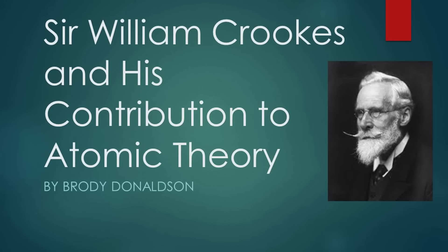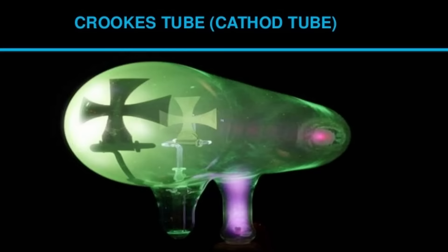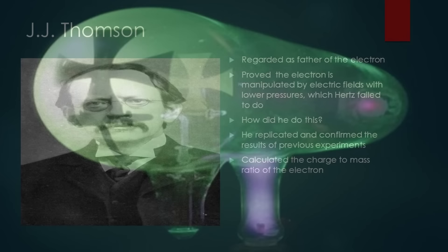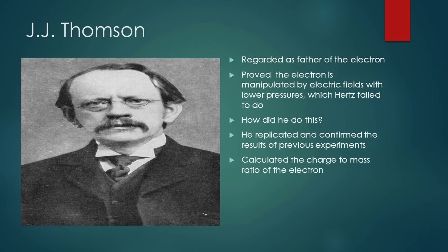Plasma was first identified in a Crooks tube and described by Sir William Crooks in 1879. He called it radiant matter. The nature of this cathode matter was subsequently identified by British physicist Sir J.J. Thompson in 1897.